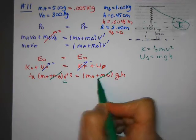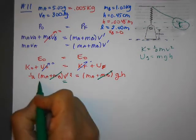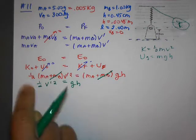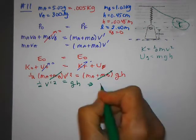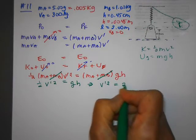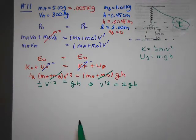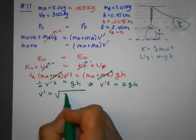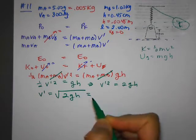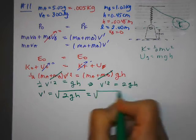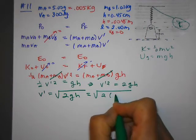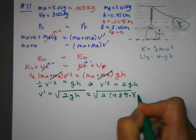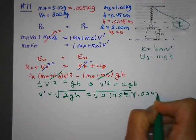Because what do you notice? So now I have one half of V prime squared is equal to GH. So I'll multiply by 2, so V prime squared is equal to 2GH, and then take the square root of both sides. So I have V prime is equal to the square root of 2GH. So that's equal to the square root of 2 times 9.8 meters per second squared times the height, which is 0.0045 meters.